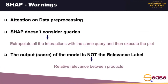Then some warnings. First of all, pay attention on data pre-processing, because for example the feature selection process can drop highly correlated training data features, hiding the explanation and potentially leading the user to an incorrect conclusion. SHAP doesn't consider queries. In fact, feature importance is computed on all the data as a unique set. So we have to be deliberate when focusing on a specific query. To see the importance of a feature for a query, we have to extract all the interactions with the same query and then execute the plot just on that subset of data.